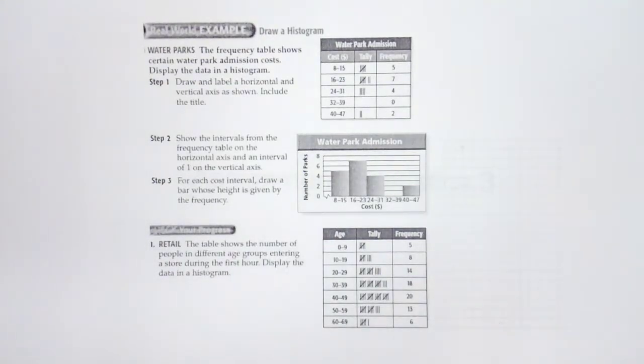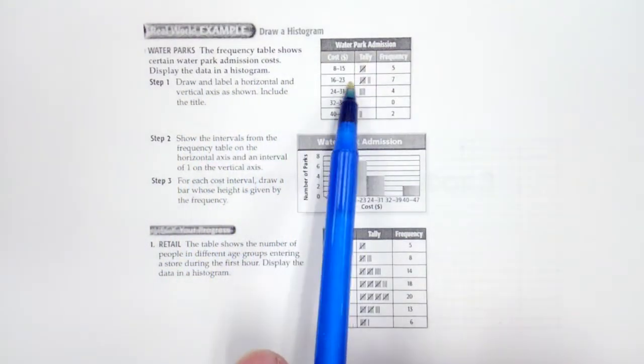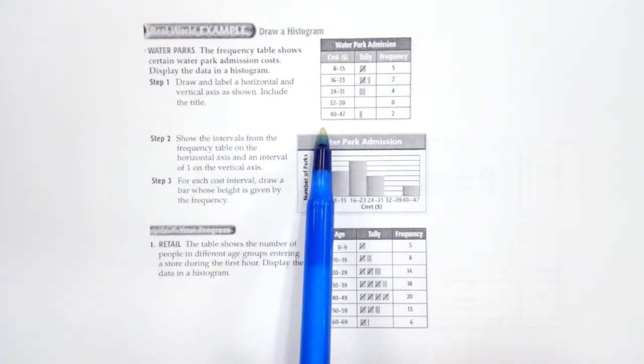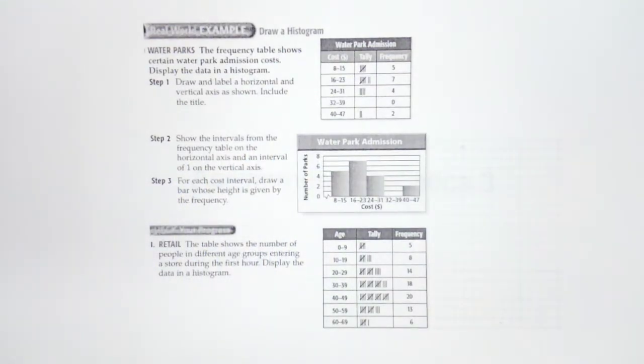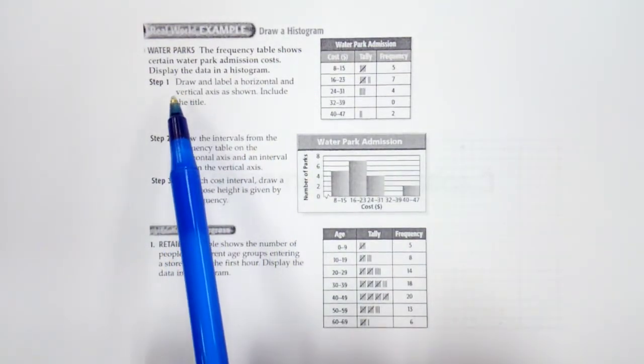So 8, 9, 10, 11, 12, 13, 14, 15. Yeah, so we have 8 data points represented in each of these pieces of data.